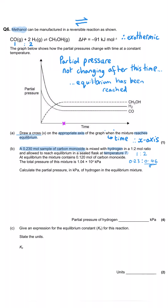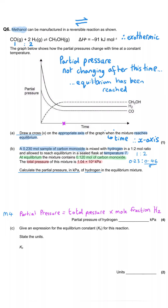The mixture is allowed to reach equilibrium in a sealed flask at temperature T. At equilibrium, the mixture contains 0.12 moles of carbon monoxide — down from 0.23 — and the total pressure is 1.04 × 10⁴ kilopascals. To calculate the partial pressure of hydrogen, we take the total pressure and multiply it by the mole fraction of hydrogen. So we first need to calculate the mole fraction, which requires the total equilibrium moles.